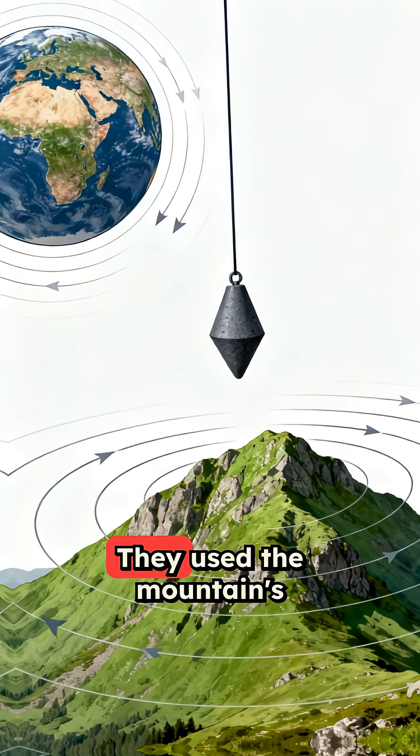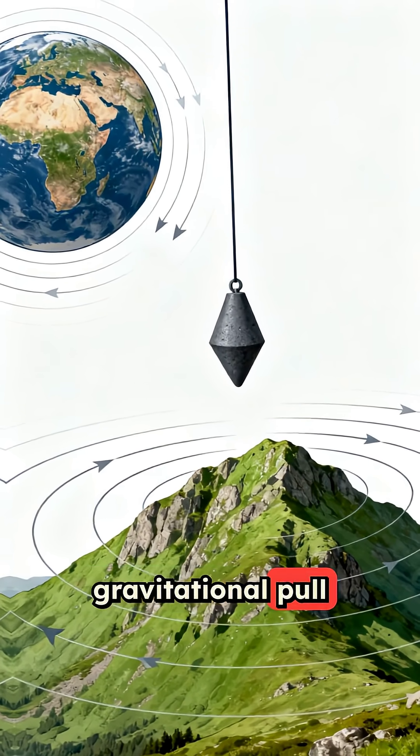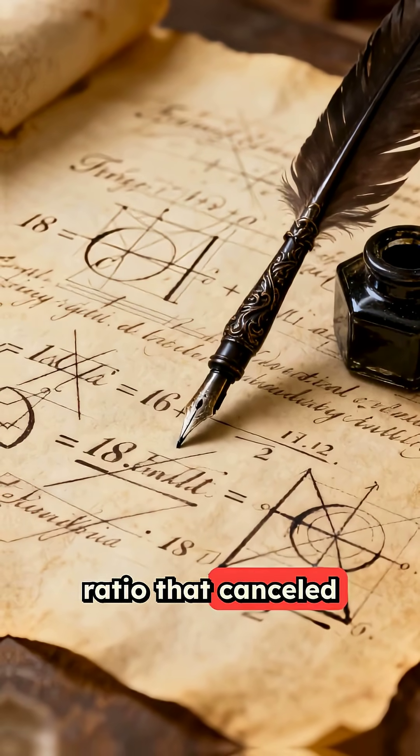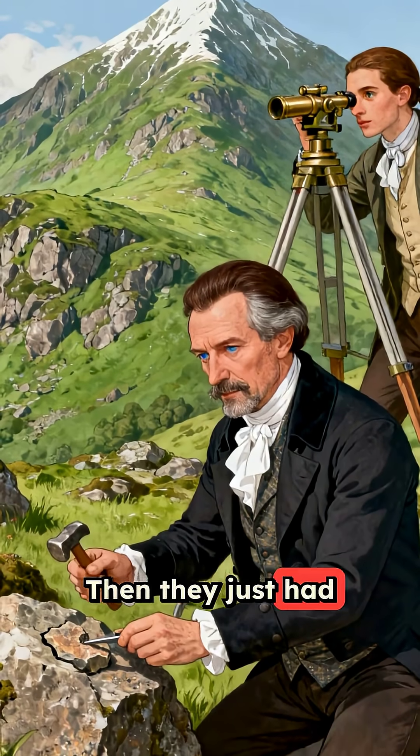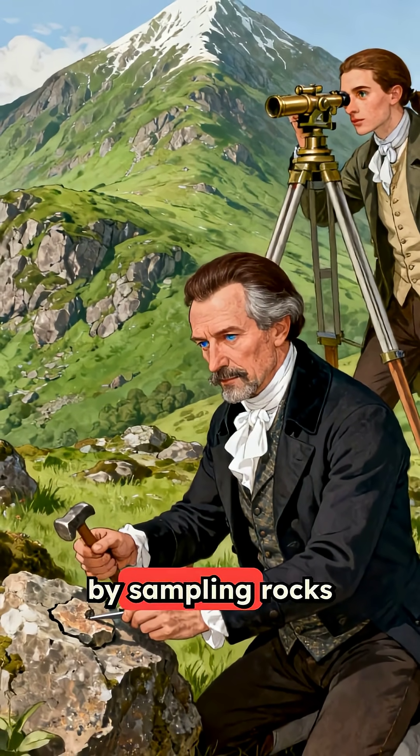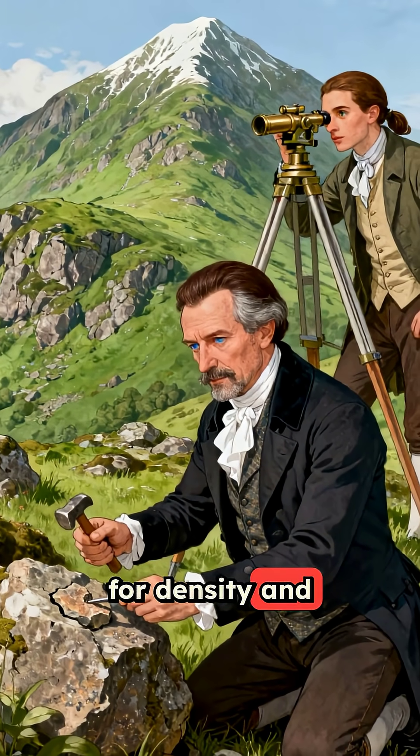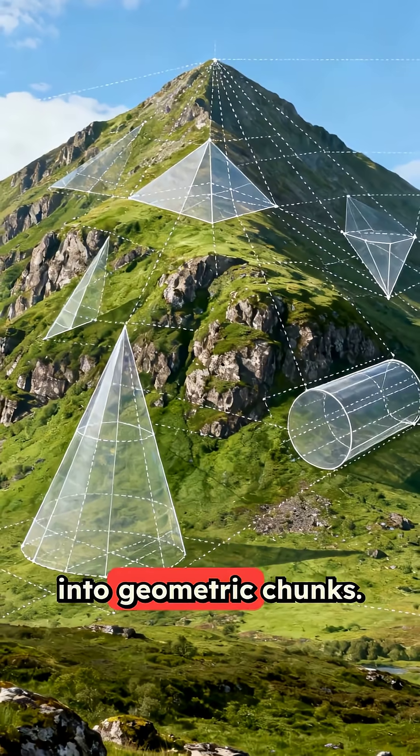Here's the genius part. They used the mountain's gravitational pull against Earth's pull to create a ratio that cancelled out the unknown gravitational constant. Then they just had to figure out the mountain's mass by sampling rocks for density and surveying its volume into geometric chunks.